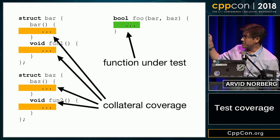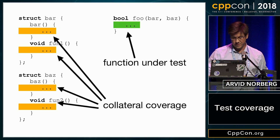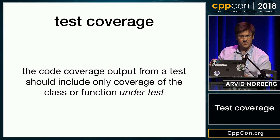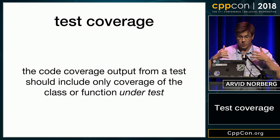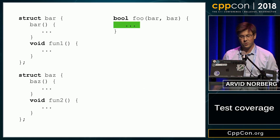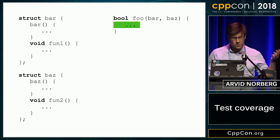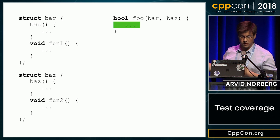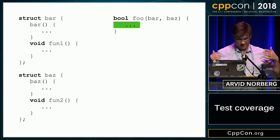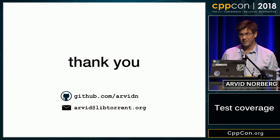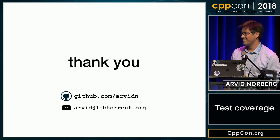That's the only function that's under test. So when you're merging all of your test coverage, you should carve out just the functions that you test and merge those. Then you get a much more honest representation of your coverage. If you want to have test coverage of bar and baz and those functions, you need to write specific tests for those functions. That's all I have to say. Thank you.